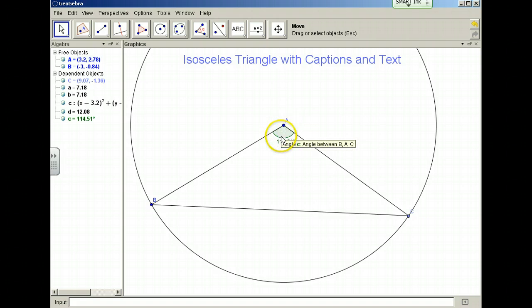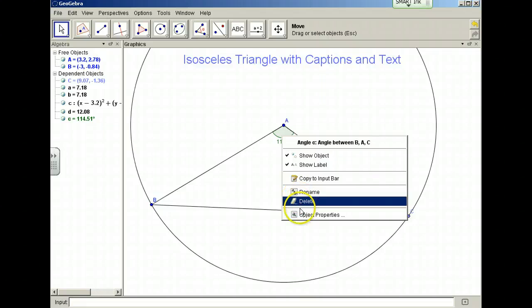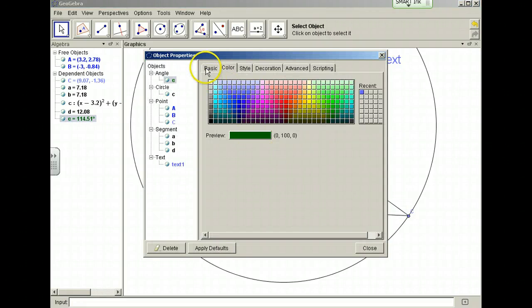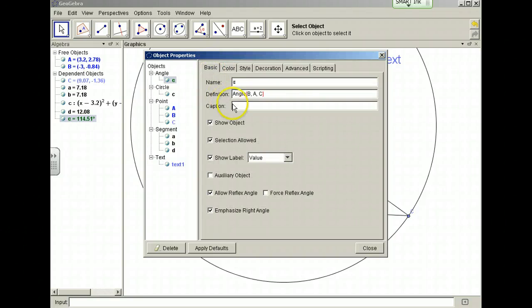So to caption this angle, I will right-click angle A, get to object properties, go to basic, and I will say angle A is the vertex angle.